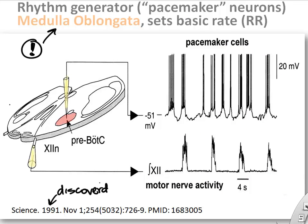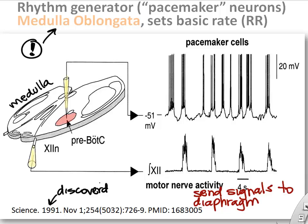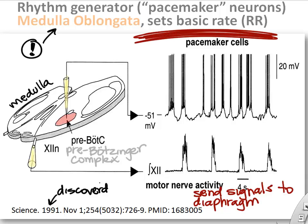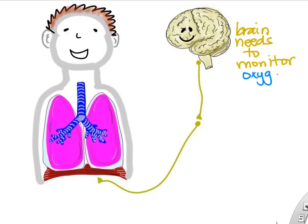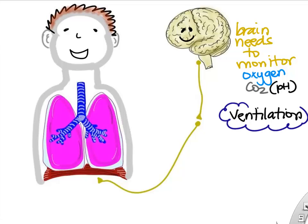Scientists discovered these neurons in the early 90s and named them the pre-Bötzinger complex — we'll just remember it as the medulla. The medulla sets the pace for respiratory rhythm by sending action potentials to the respiratory diaphragm. The brain needs to monitor CO2 levels and oxygen levels in the body to know how much ventilation we need.